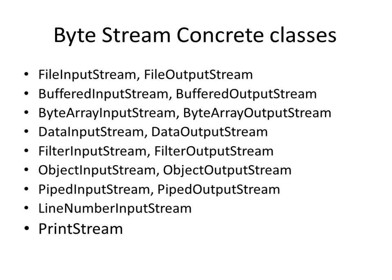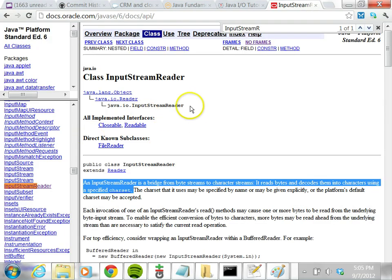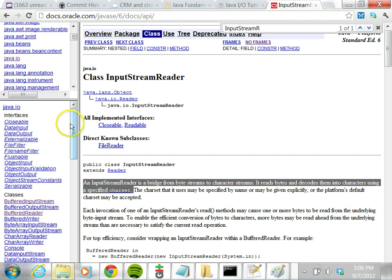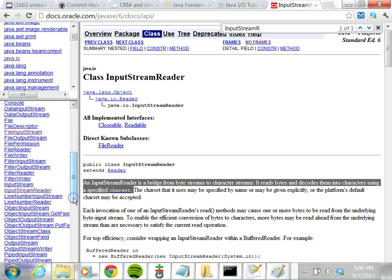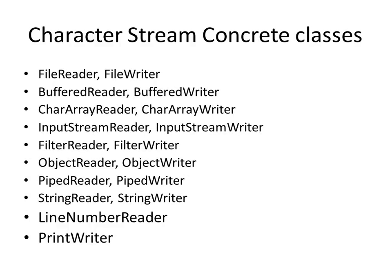For the byte stream concrete classes, there are many derived classes. You have FileInputStream and FileOutputStream, BufferedInputStream and BufferedOutputStream, and so on. You can look at the documentation for all these classes in the JDK API under the java.io package. Similarly, for character stream derived classes, you have FileReader, FileWriter, BufferedReader, BufferedWriter, and so on.